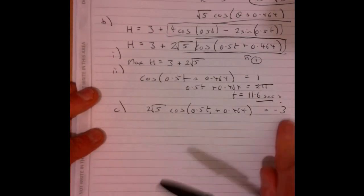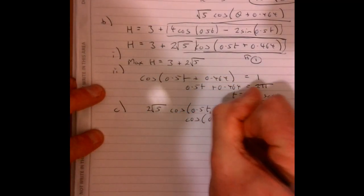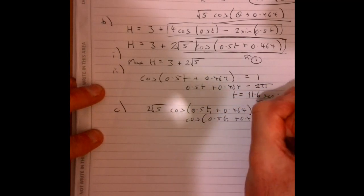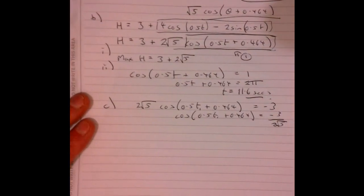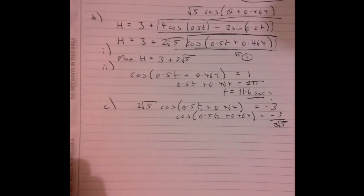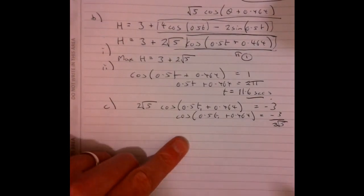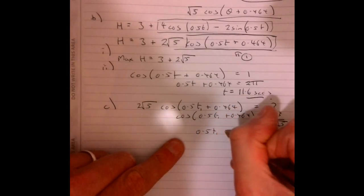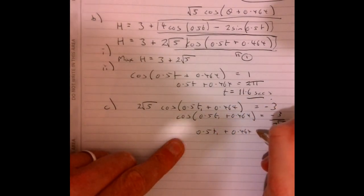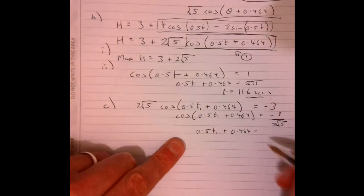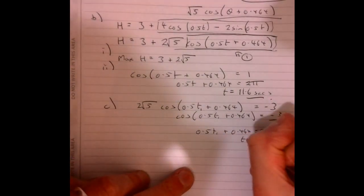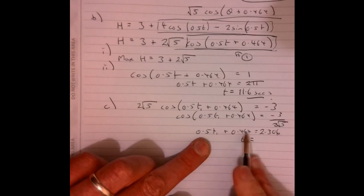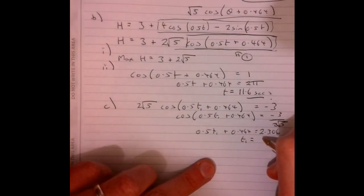So now we're going to divide. So cos of 0.5T1 plus 0.464 equals minus 3 over 2 root 5. It doesn't look very nice, but we're going to use our calculator here. So let's inverse cos this. So that gives me 0.5T1 plus 0.464 and that equals 2.306. And jumping a little step here, I'm working out taking this away, multiply by 2. So T1 equals 3.684.